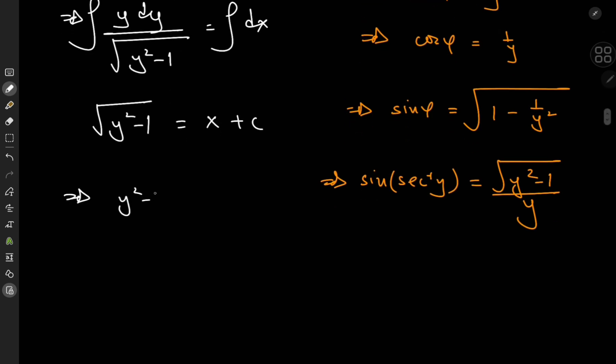And this implies that y squared minus 1 equals x plus c whole thing squared. And this means that y itself equals 1 plus x plus c squared. And using the square root, of course, we have both positive and negative square roots.